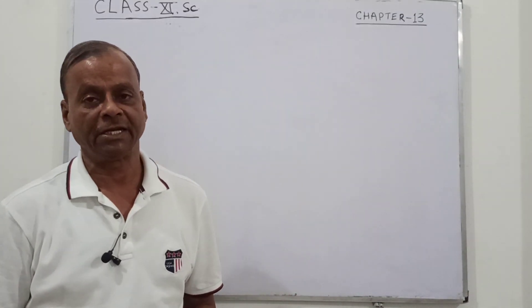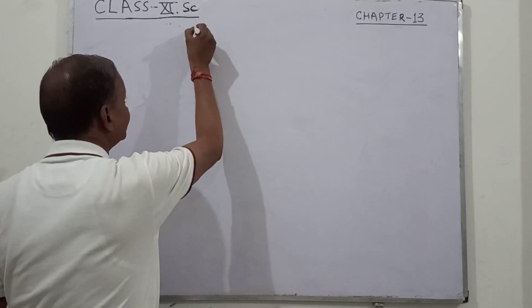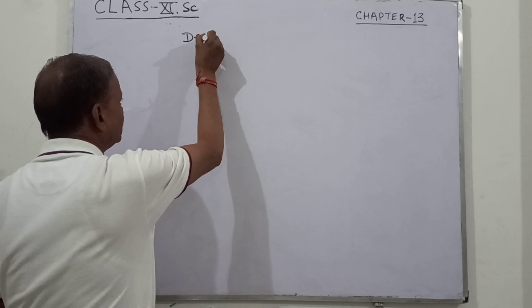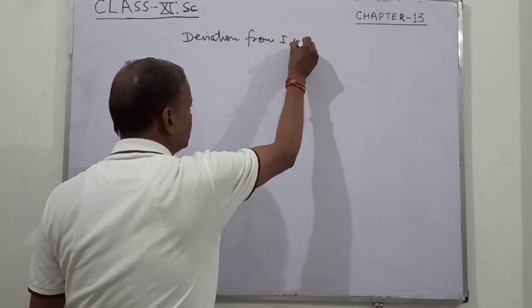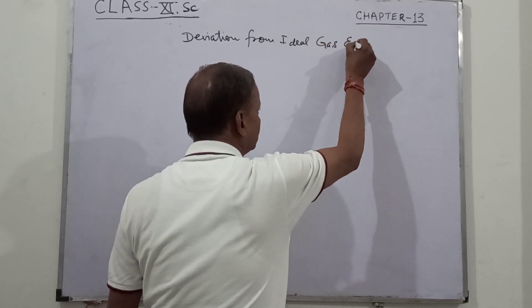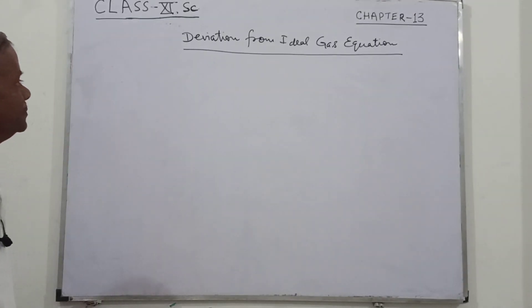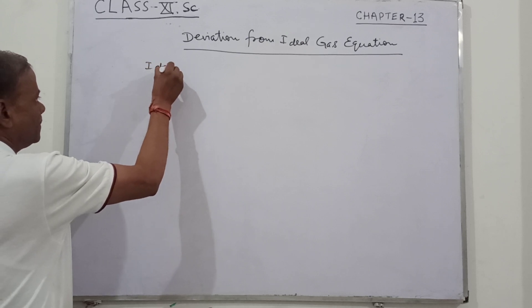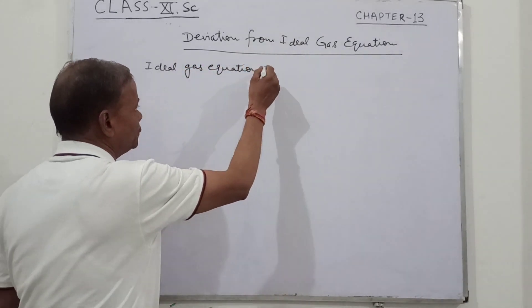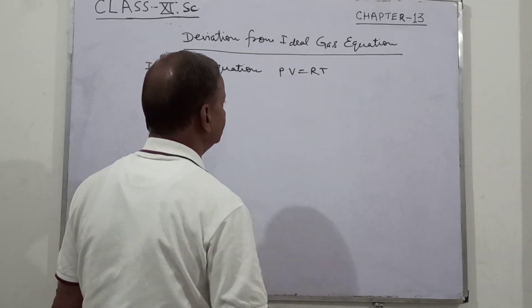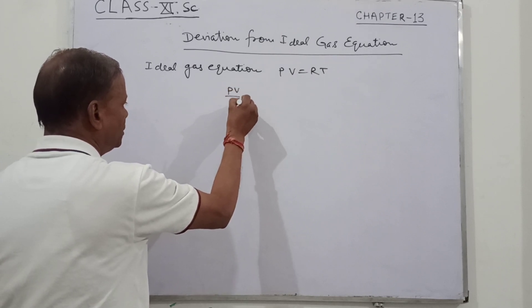Hello friends, now in class 11th I will tell you about the deviation from ideal gas equation. The ideal gas equation is PV equal to RT. So, here we have PV upon RT equal to 1.